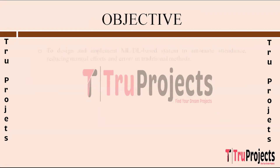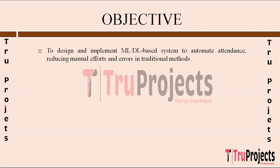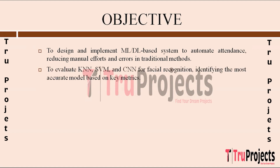Regarding the objectives of the project, the primary objective is to design and implement a sophisticated system leveraging machine learning and deep learning techniques to automate attendance tracking processes. This system aims to reduce reliance on manual efforts and minimize errors commonly associated with traditional attendance recording methods. Through rigorous evaluation and comparison of various machine learning models such as KNN, SVM, and CNN, the project seeks to determine the most accurate and reliable approach for facial recognition tasks.